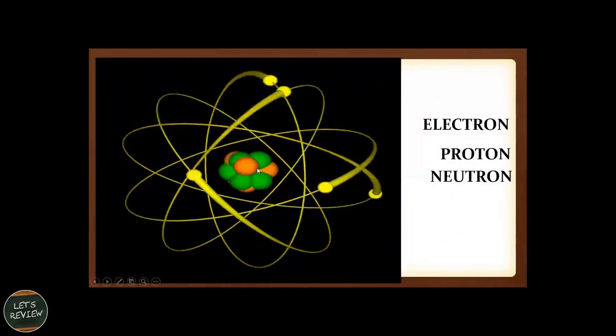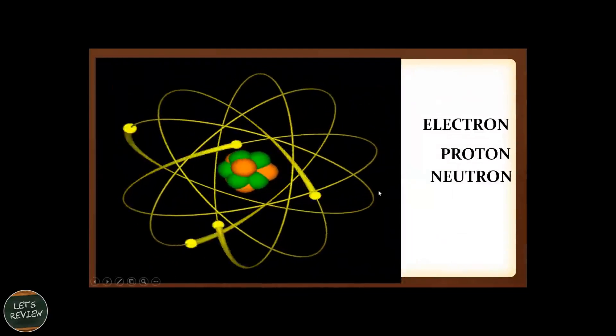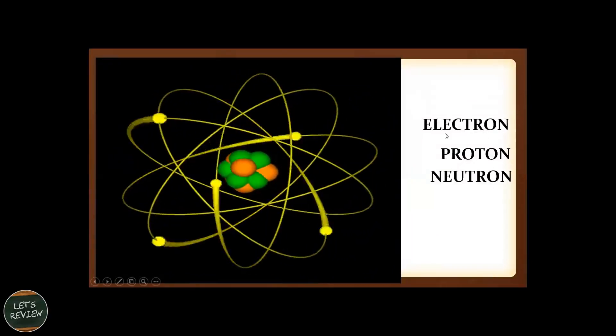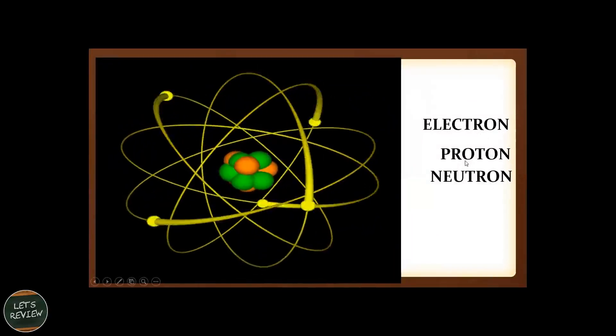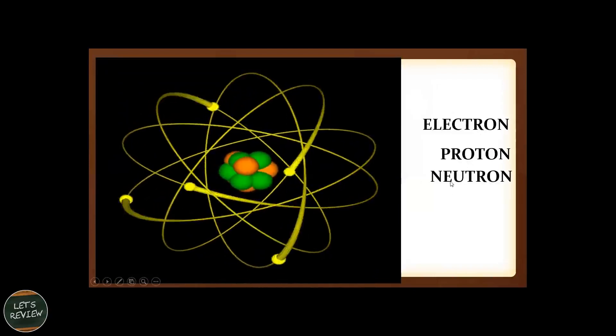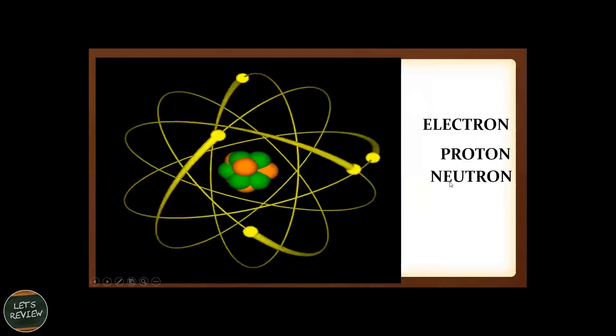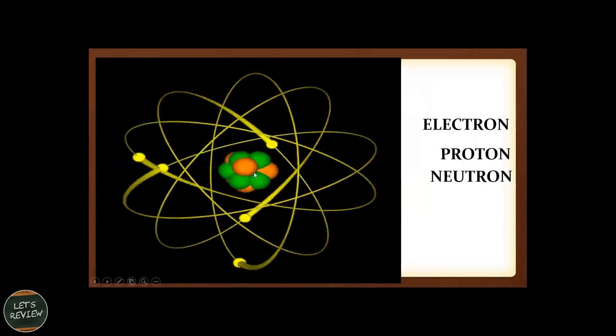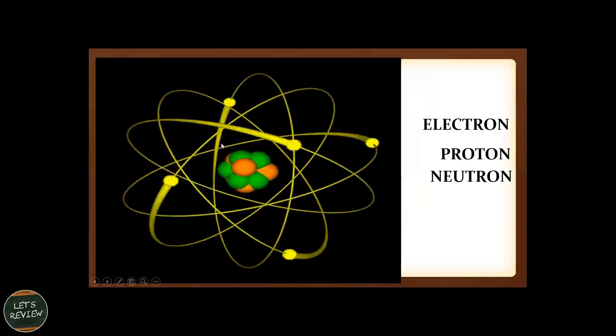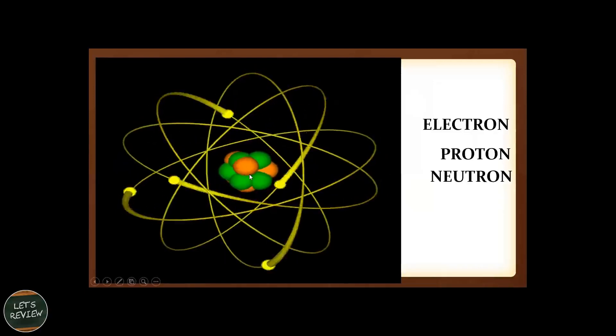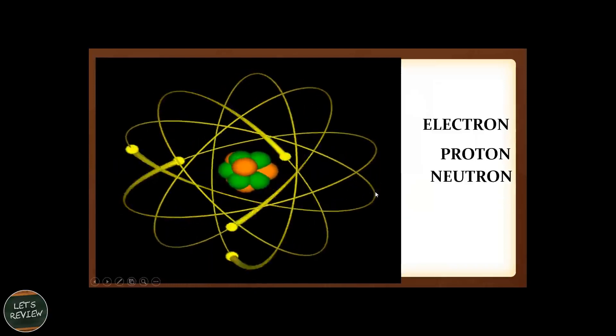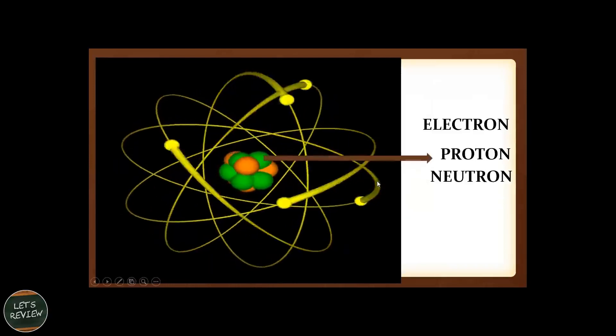An atom is composed of three subatomic particles: electron, proton, and neutron. Electron is a negatively charged particle, proton is positively charged, and neutron has no charge. In the nucleus, composed of protons and neutrons, most of the mass of the atom comes from here. Electrons seem to be massless and move outside the nucleus.